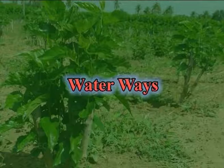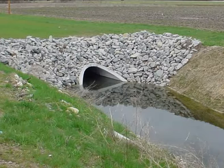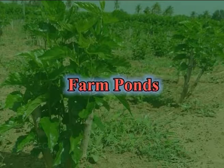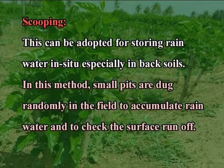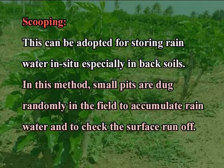Ging terracing is practised for black soils with less than 2 percent slope. Waterways are useful where slope is more and care has to be taken to handle increased discharge through water drainage. Farm ponds are structures to collect runoff for possible future use by way of recycling water to give protective irrigation during dry periods. Fallow plowing is done by repeated plowing with a country plow just before the onset of monsoon for maximum infiltration of rainwater. Scooping can be adopted for storing rainwater in-situ especially in black soils, where small pits are dug randomly in the field to accumulate rainwater and check surface runoff.